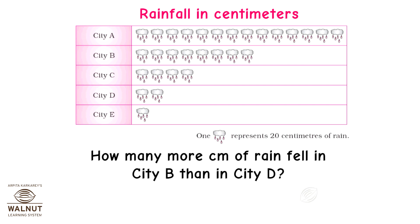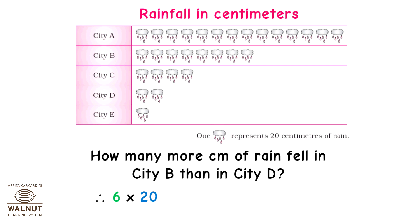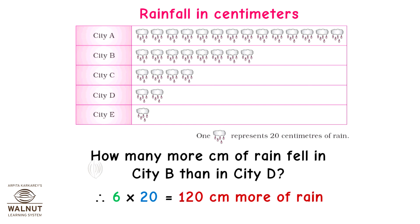How many more centimetres of rain in city B than in city D? We see six extra symbols, therefore 6 into 20 which is equal to 120 centimetres more rain in city B than in city D.